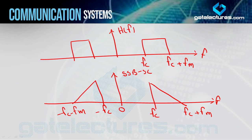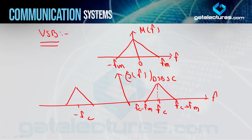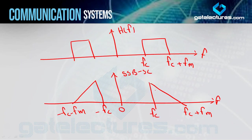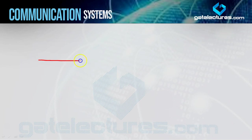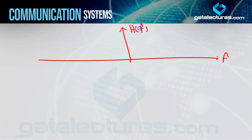Aapka band pass filter ideal na ho - that is, agar woh FC se kuch neeche ki frequencies ko pass kar de, ya FC plus FM se kuch upar ki frequencies ko pass kar de - toh humne diagram mein already dekha hua hai last video mein. Jab aapka band pass filter FC plus FM se upar ki frequency ko pass karta hai, tab toh koi problem nahi hoti, kyunki DSBSC signal mein FC plus FM ke upar kuch bhi signal aapka available nahi hai. But agar woh FC se neeche ki frequency ko pass kar de, toh aapki upper side band ke saath saath small portion of lower side band bhi pass ho jata hai. Toh yahan par agar main filter ko non-ideal le loon, kuch is tarah se - my filter HF - but is time filter aapka non-ideal hai.